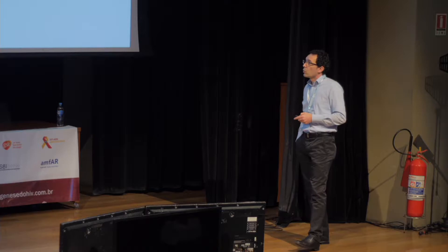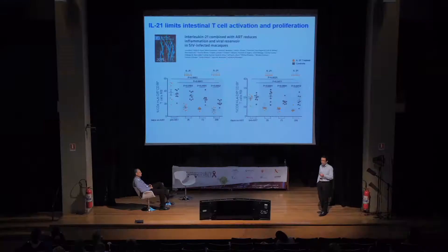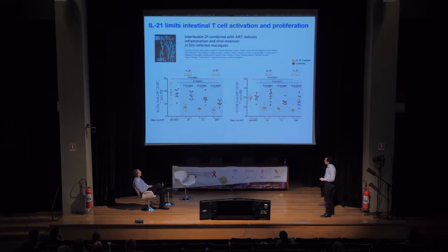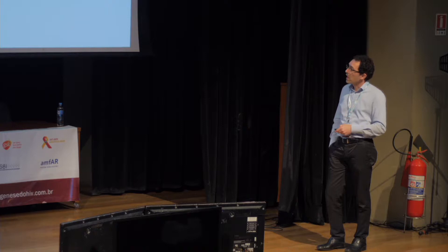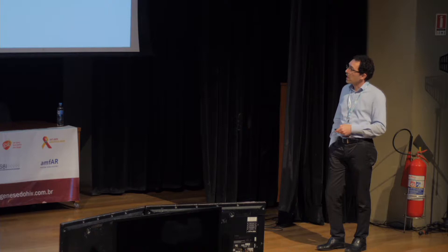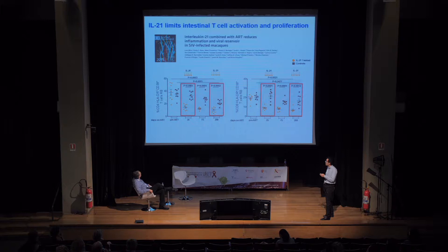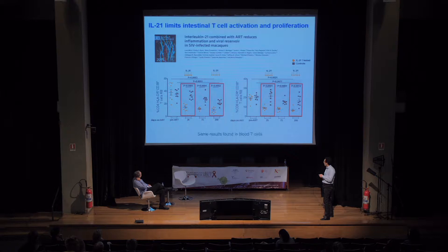By improving gut epithelial integrity, we were able to significantly reduce residual inflammation. Here I show CD4 and CD8 cells expressing activation markers HLA-DR and CD38 in rectal biopsies. In controls, immune activation decreases during ART. In IL-21-treated animals, inflammation goes down much faster and more significantly at all time points on ART. We found the same results in blood for those markers and also for Ki67 as a marker of cycling cells.